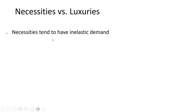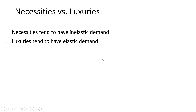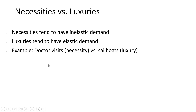Necessities versus luxuries are the second determinant of price elasticity of demand. Necessities tend to have inelastic demand, whereas luxuries tend to have more elastic demand. For example, doctor visits might be considered more of a necessity versus sailboats, a luxury. So doctor visits will tend to have more inelastic demand, and sailboats more elastic demand.